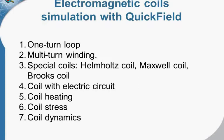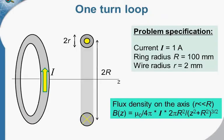Let's start with the first case — the simplest coil, the one-turn circular loop. The coil has the form of a ring. The ring radius is 100 mm and the wire radius is 2 mm. The coil carries a direct current of 1 ampere. The wire radius is much smaller than the ring radius, so we can utilize the analytical solution and compare our results against it.